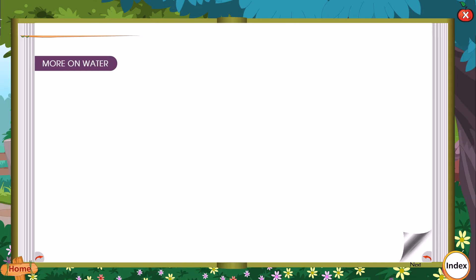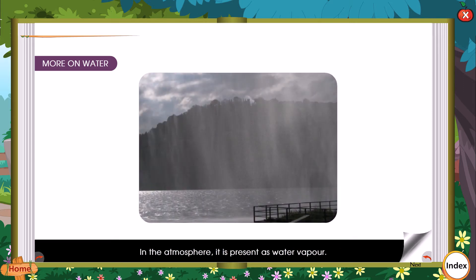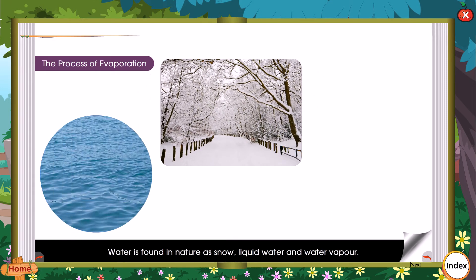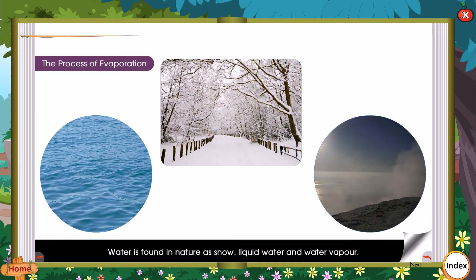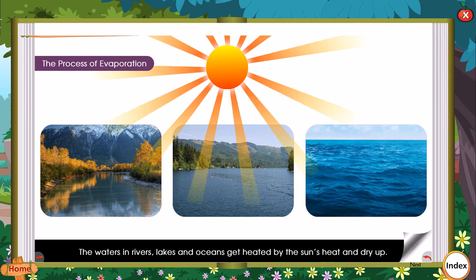Water covers about 70 percent of the surface of the earth. There is water in the ground as groundwater, and in the atmosphere it is present as water vapour. Water is found in nature as snow, liquid water and water vapour — these states are interchangeable.